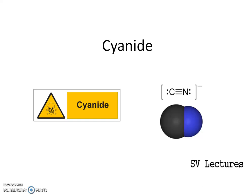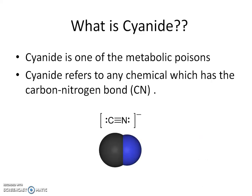Hi there. Today we'll be looking at cyanide. So what is cyanide? Cyanide is one of the metabolic poisons. Cyanide refers to any chemical which has the carbon-nitrogen bond. This in particular is the cyanide ion.